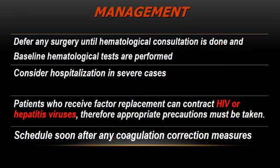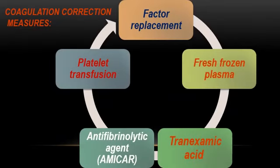Schedule the appointment soon after any coagulation correction measures. Options for coagulation correction include factor replacement as suggested by the hematologist, fresh frozen plasma, platelet transfusion, and the use of anti-fibrinolytic agents such as aminocaproic acid (Amicar) and tranexamic acid.